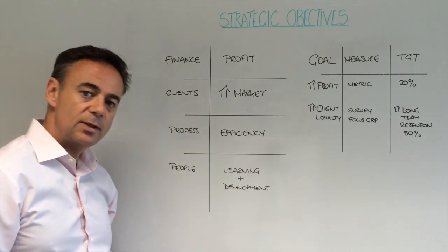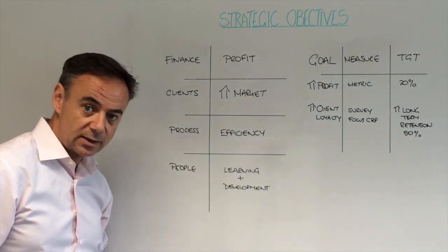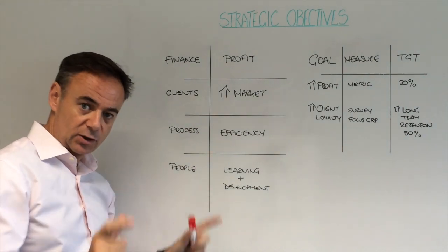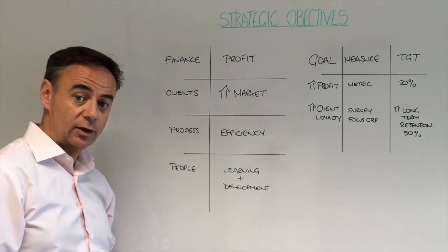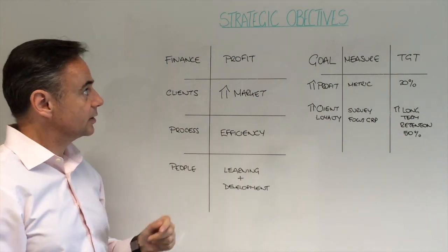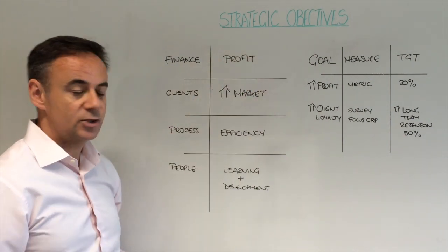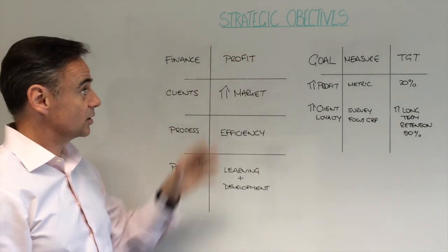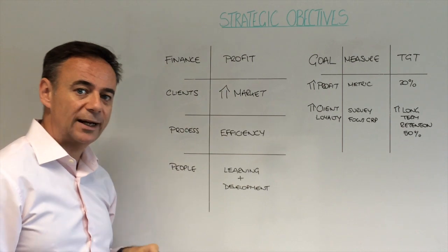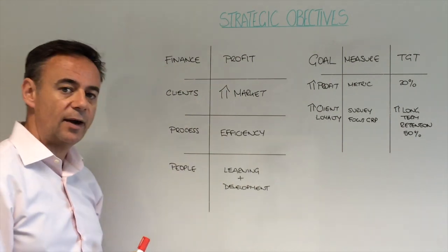There were a couple of university professors who wrote a book in the 1980s called The Balanced Scorecard — Kaplan and Norton — who applied defining strategic objectives and how you pull that into your business across four key areas.